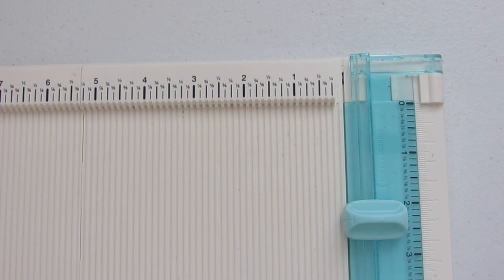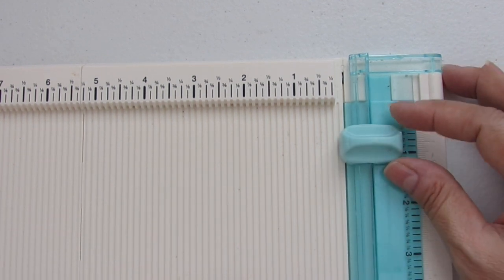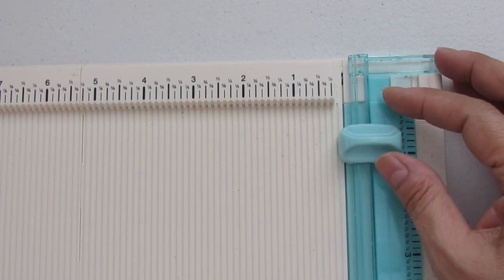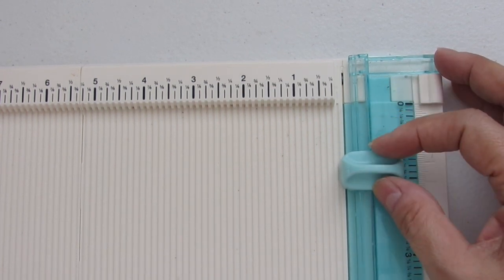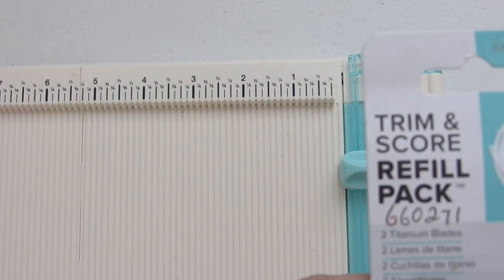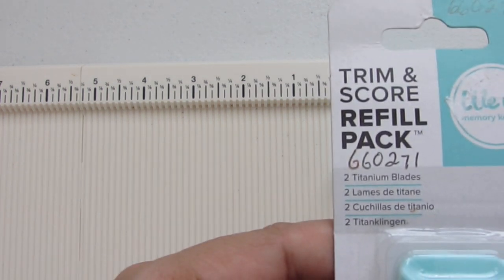Hi, today I'm going to show you how to remove the blade from your We Are Memory Keepers scoreboard and cutter. The part number for this blade is 660271.